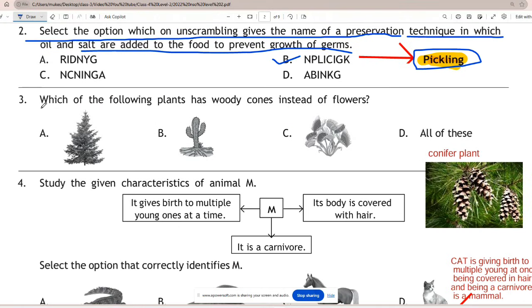Question 3: Which of the following plants has woody cones instead of flowers? Correct answer is option C - conifer. Conifers are plants that have woody cones instead of flowers.